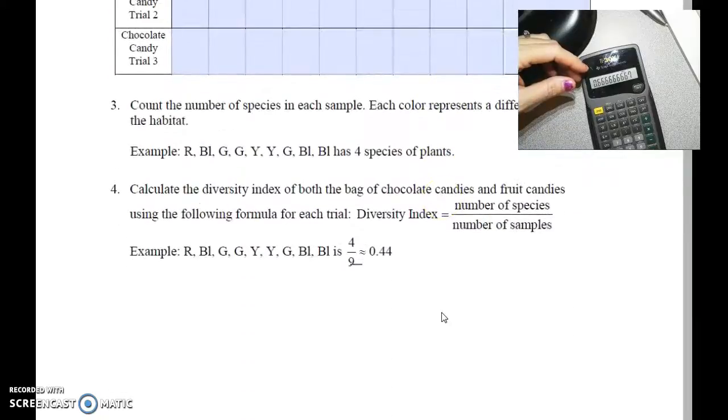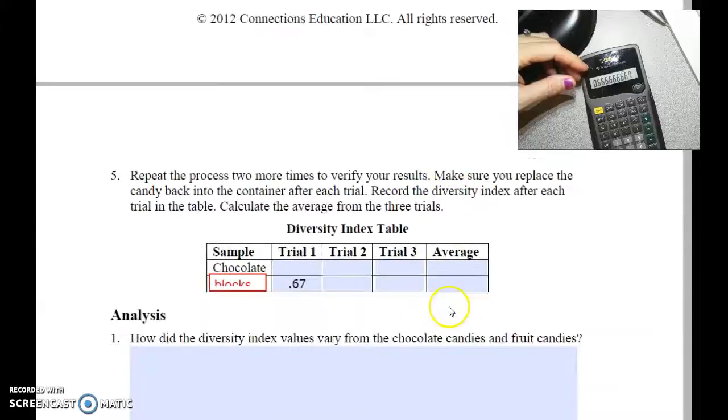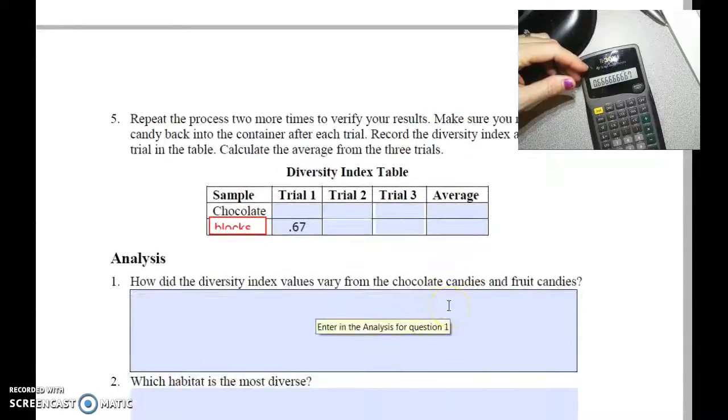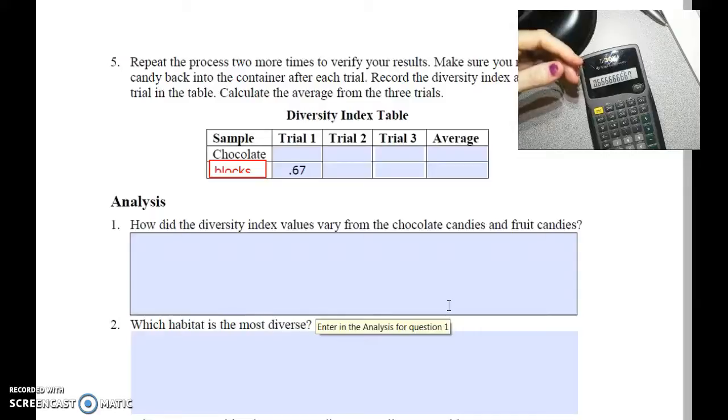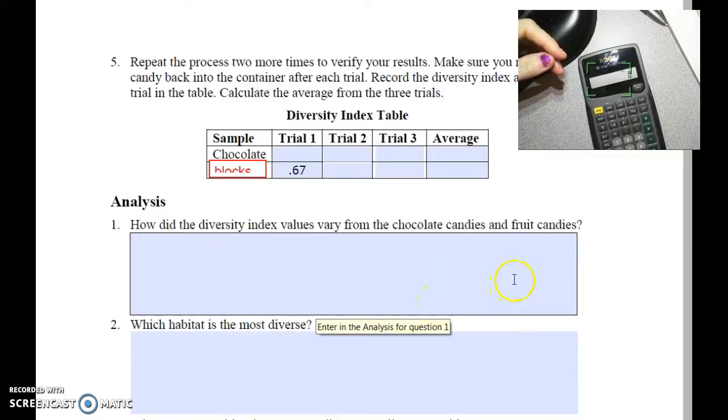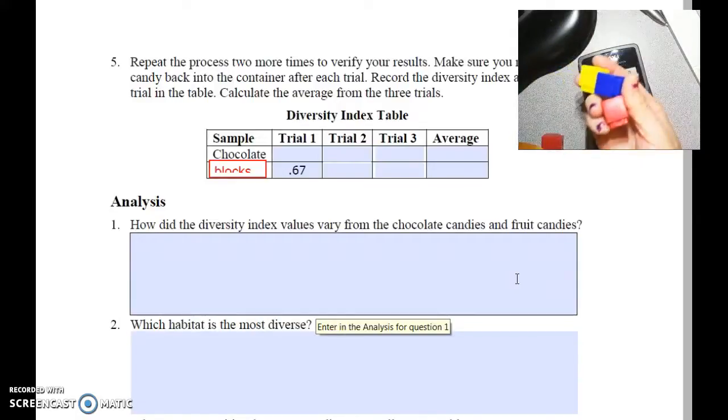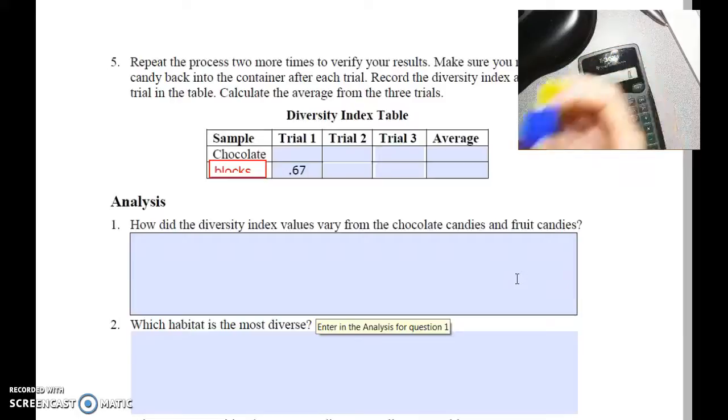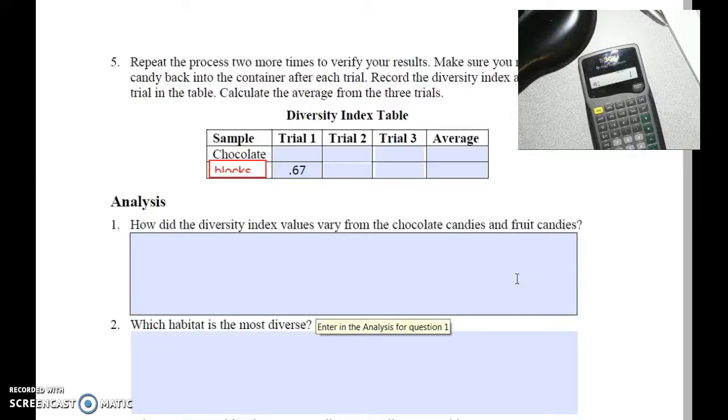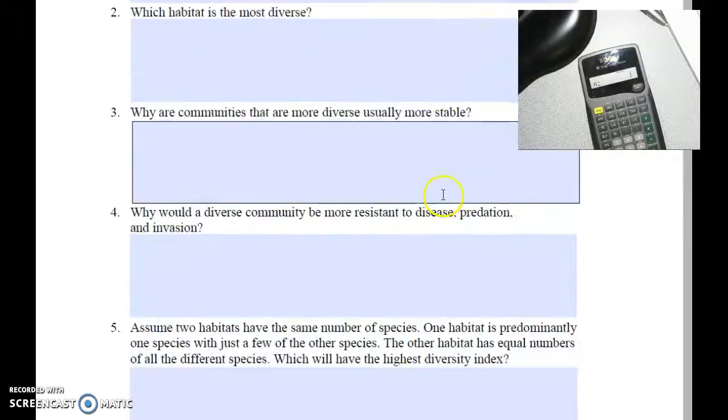You're going to do that for three different trials because that time I was lucky and I picked all of my different colors, but it is possible that I might not. It depends if I have a lot of blues in there and very few yellows and very few reds. I may end up with a lower diversity index. Now that brings me back to when you originally stocked these, you don't have to put the same number of each color in there. You're going to want to have a random assortment.